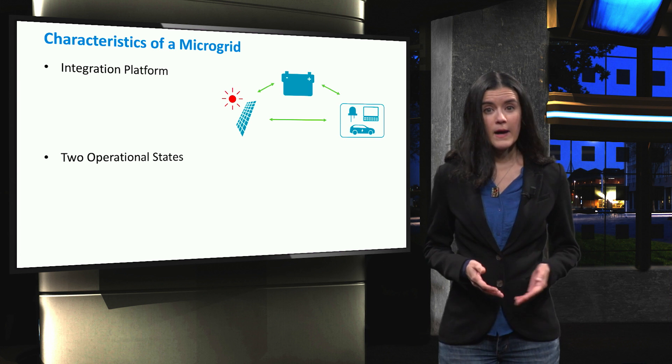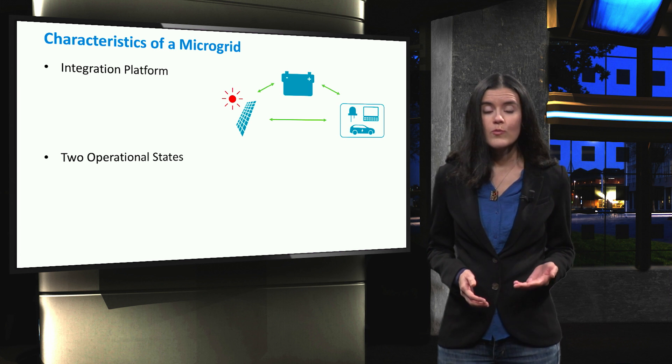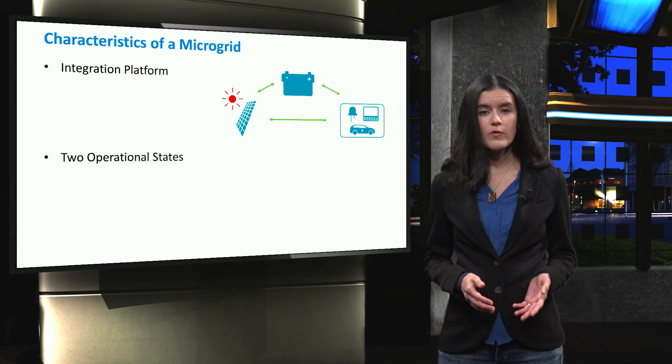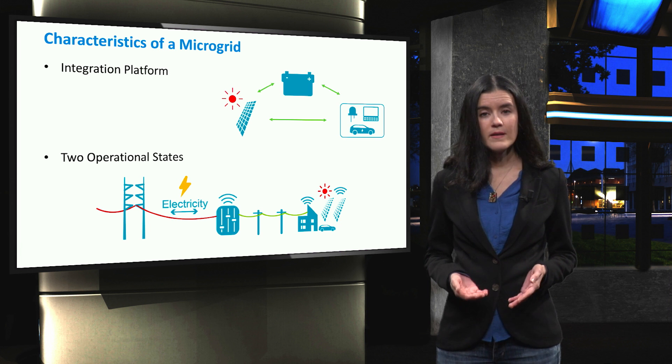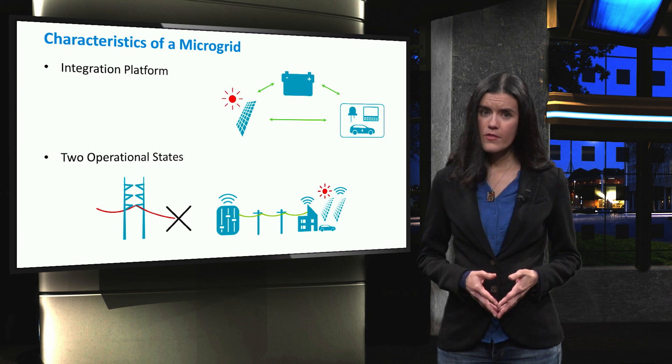Second, a microgrid should be able to work in two operation modes, both grid connected mode and emergency mode or islanded mode.